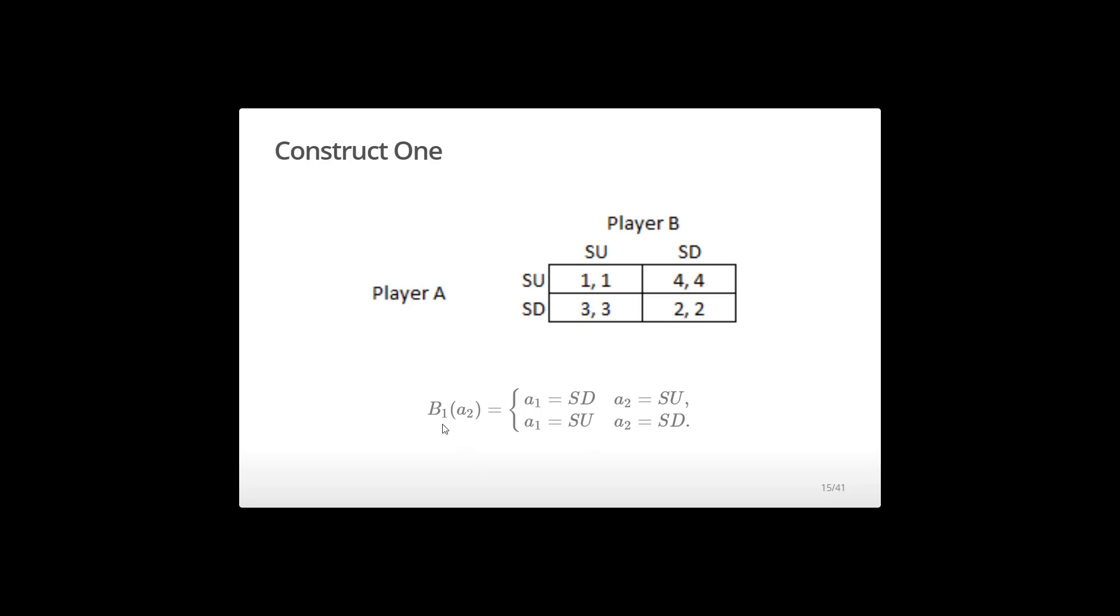All right. Well, how do I construct a best response function? Well, I'm constructing a best response function from player one. Notice that's a subscript on the B. B stands for best response. Subscript says for which player. And what am I responding to? I'm responding to a choice by the other player. Well, the other player only has two choices. They can either speed up or they can slow down. Well, what if player two chose to speed up? But player two chooses to speed up. I am forced into this first column.